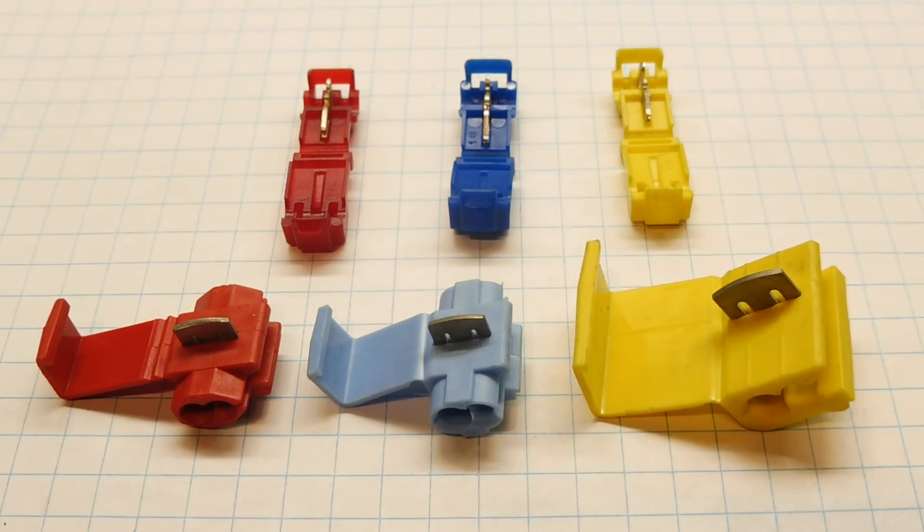Here are the two types of wire taps that I use to tap into the power wire. They come in three different sizes, the red, the blue, and the yellow, for the three different ranges of wire gauges. The taps on the bottom were permanent taps.